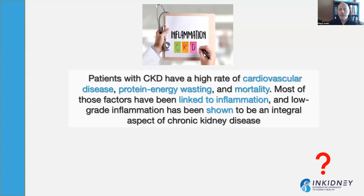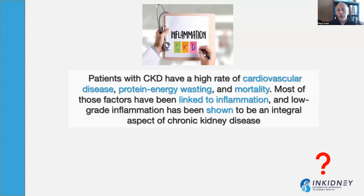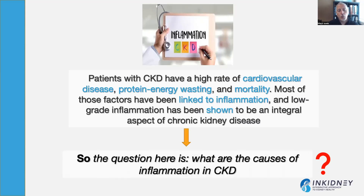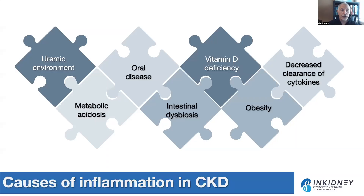Patients with chronic kidney disease have a higher rate of cardiovascular disease, heart disease, protein energy wasting, and increased mortality rate. These factors have been linked to inflammation, and low-grade inflammation has been shown in chronic kidney disease. I'll show you this data later in the video, and I'm going to be sharing all these studies in the description below. The question here is: what is the cause of inflammation in chronic kidney disease? There are several, and we're going to decipher them one by one.